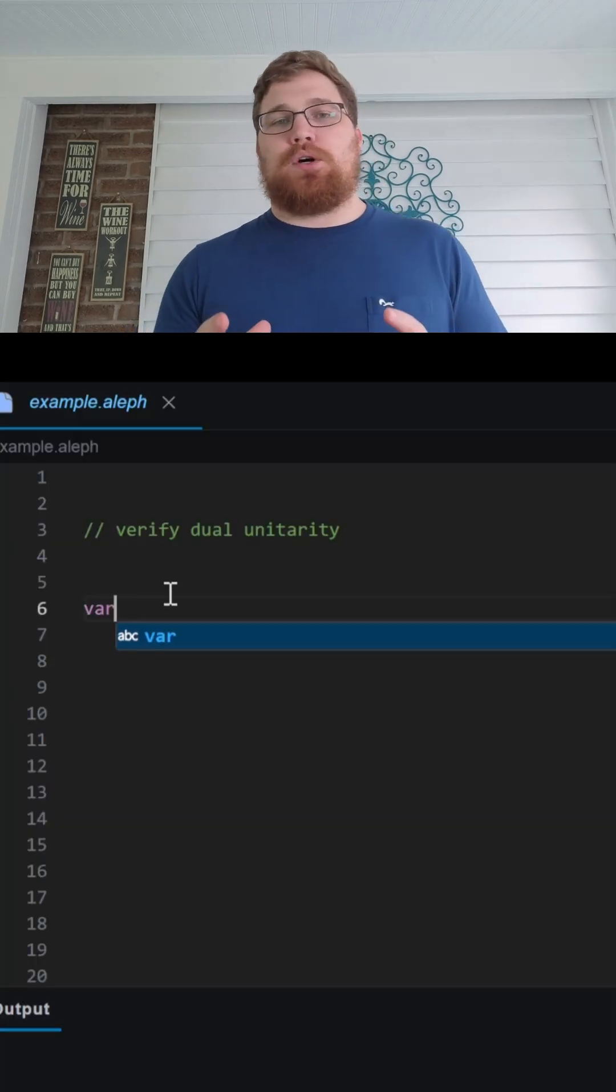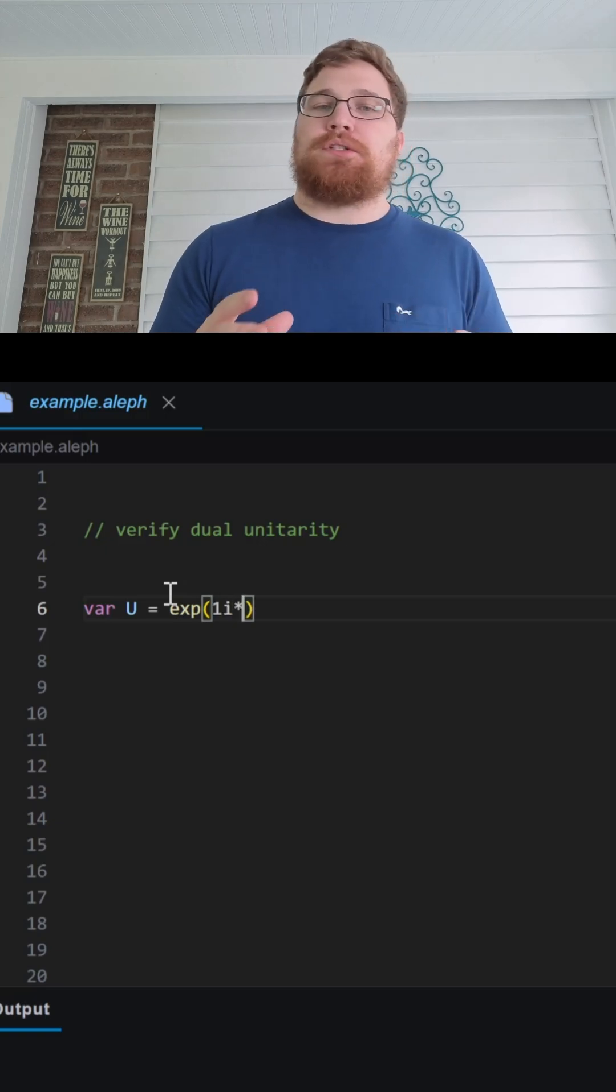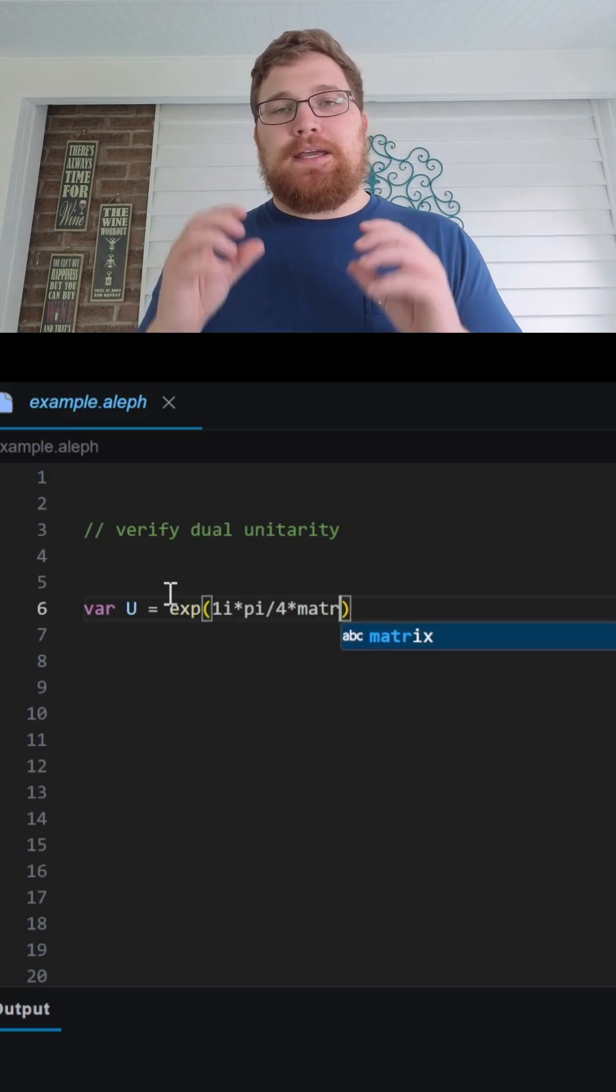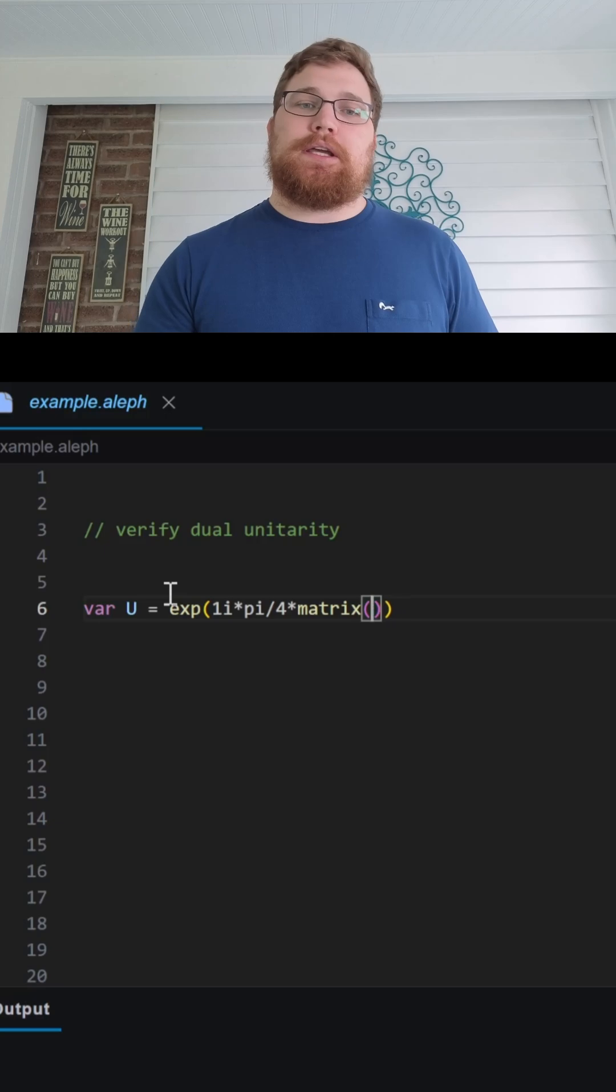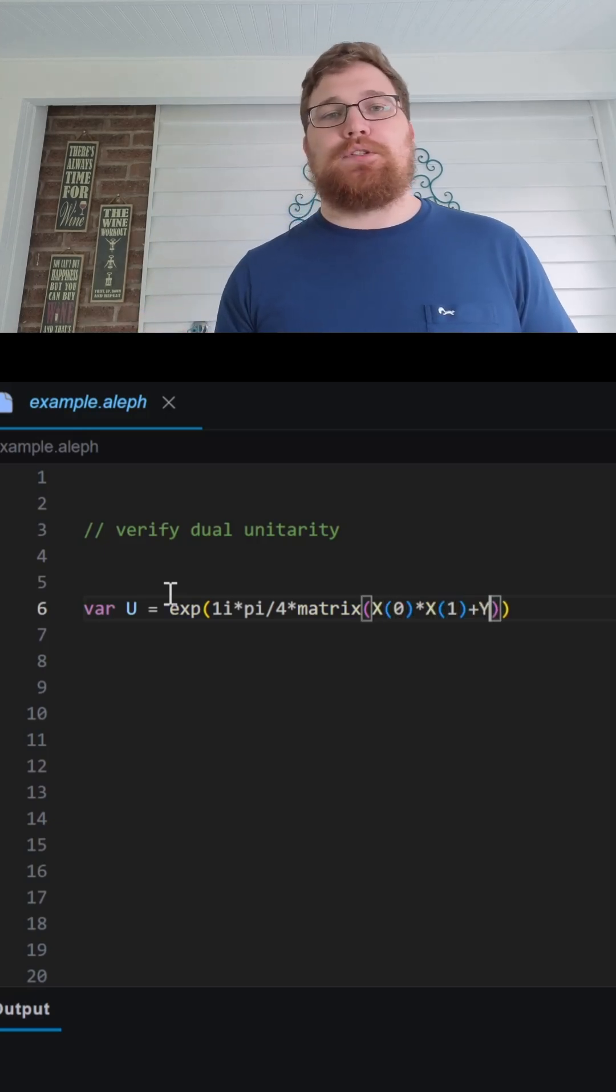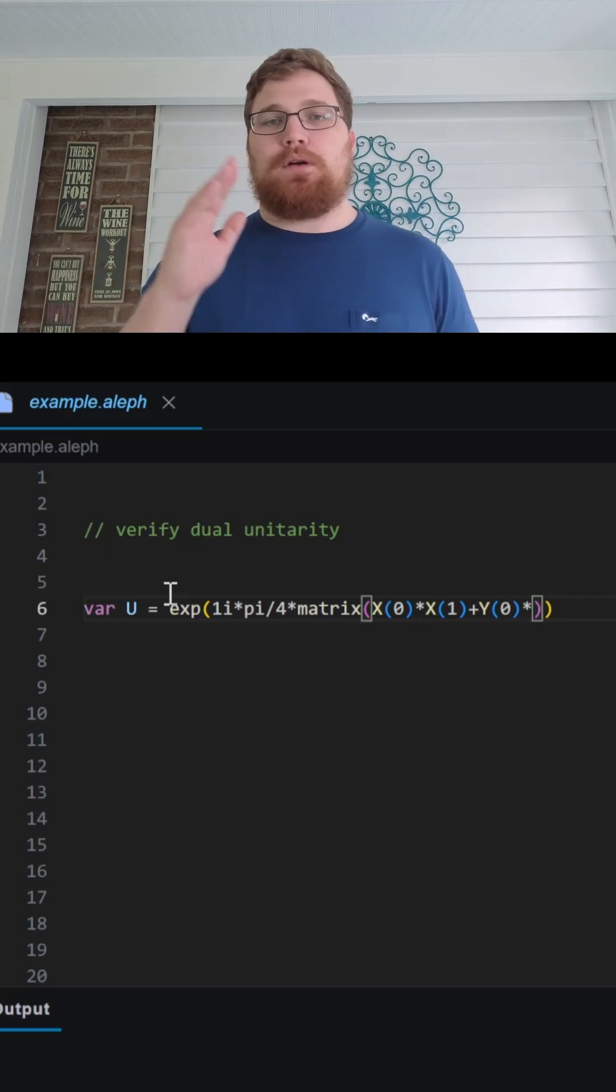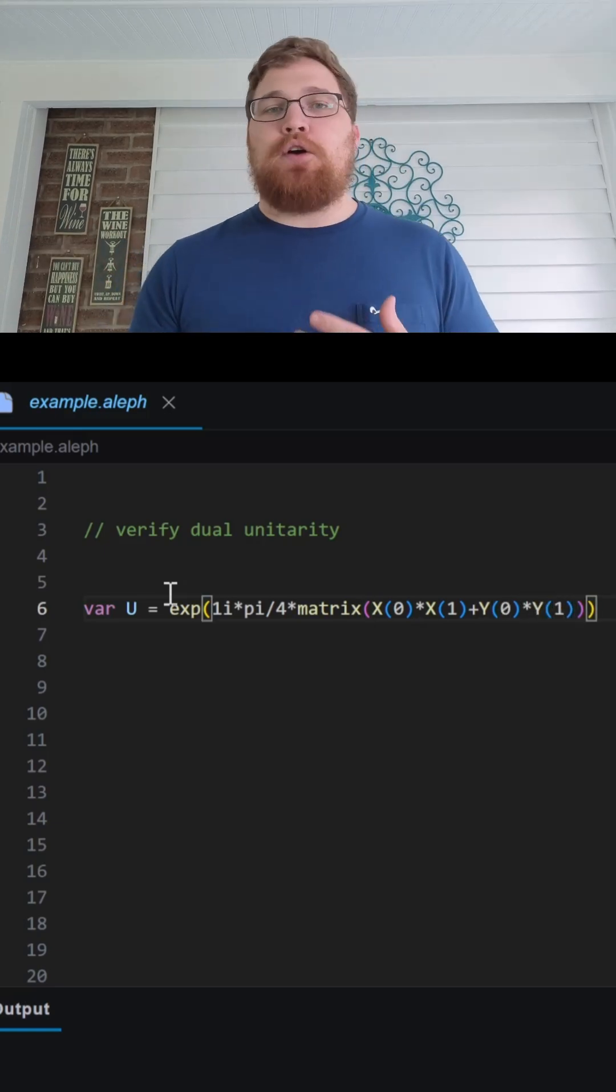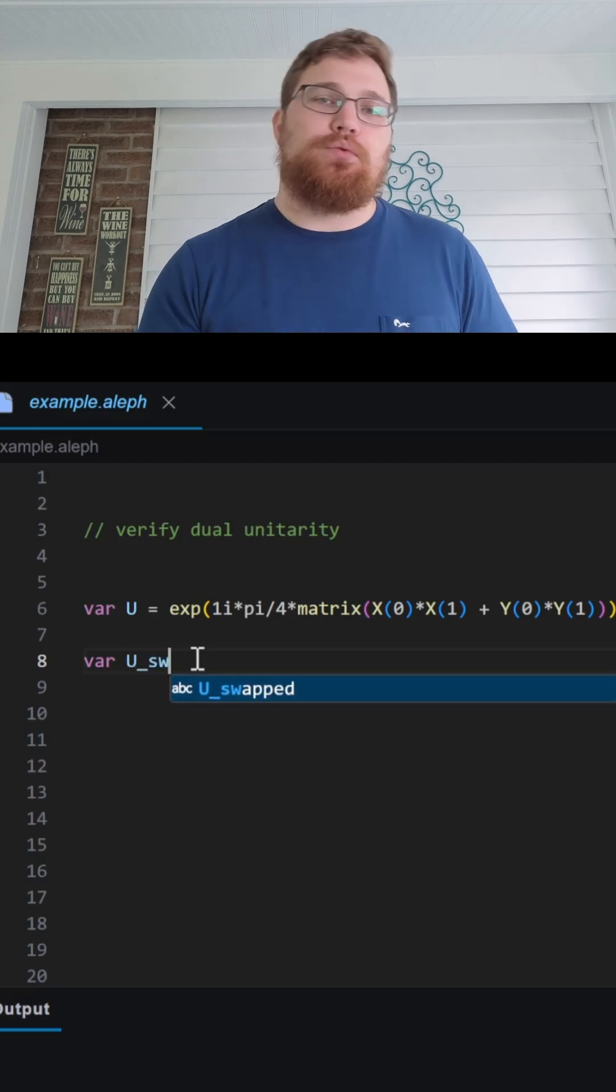To do that, what we need to do is call it a space-time swap. We are going to build our unitary matrix U in the fashion of a dual unitary gate. That's an exponential, i pi over 4, setting J equal to 0, we get pi over 4 XX, pi over 4 YY. And we're going to store the output inside of a variable called USwapped.